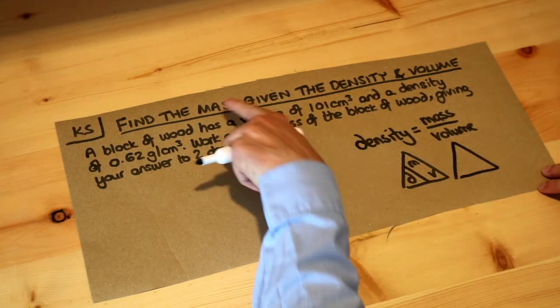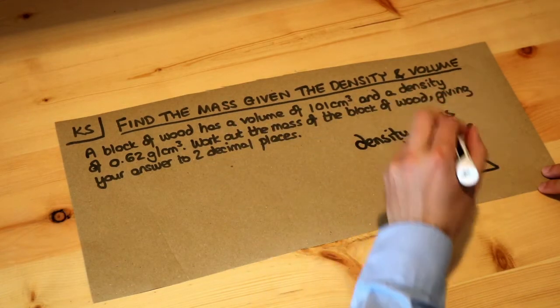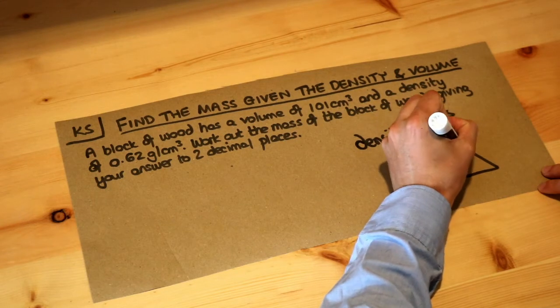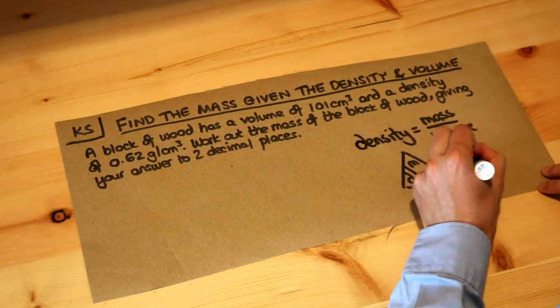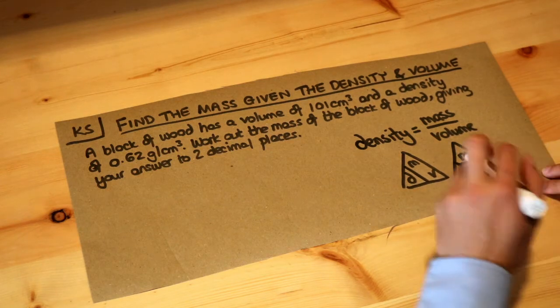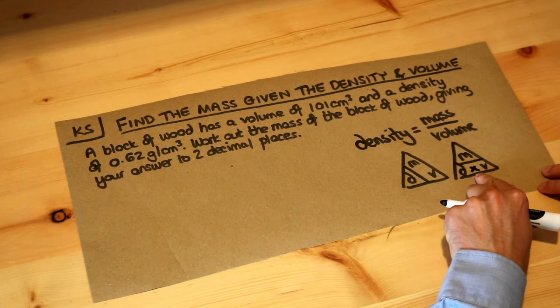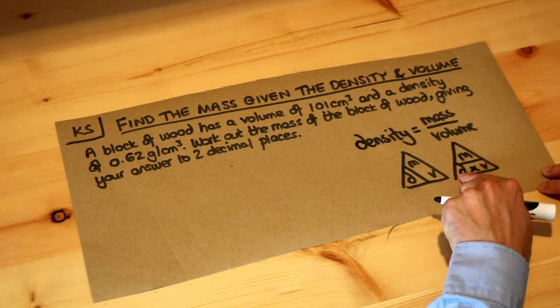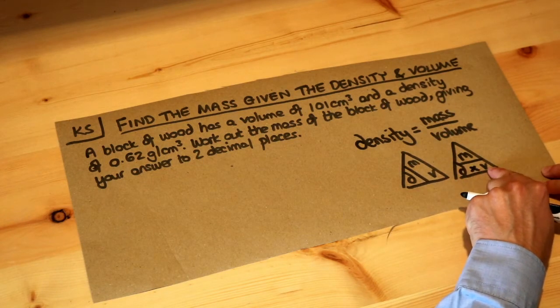But we want to work out the mass given the density and the volume. So if I put the line here, we can see that mass is density, and then this is on the same level as volume. Now if on the same level, we times these together, so mass is density times volume.